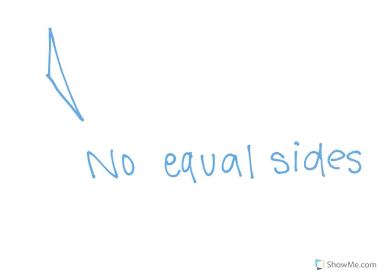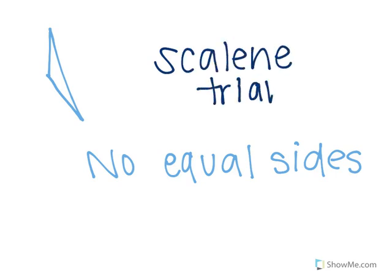Since there's no equal sides, we call it scalene. So this is a scalene triangle. Okay, so a scalene triangle has no equal sides.